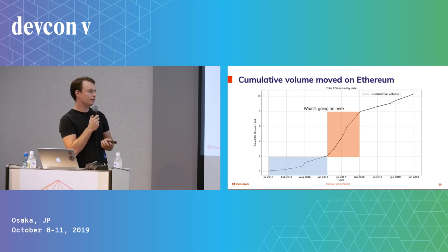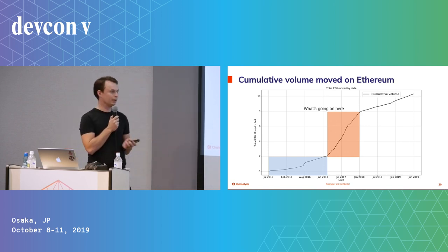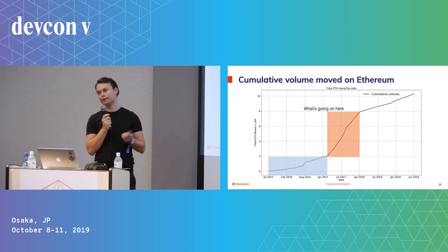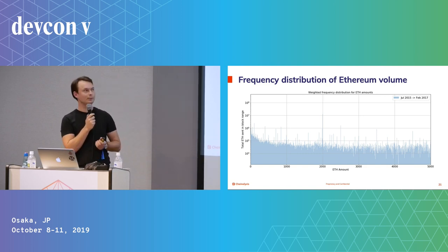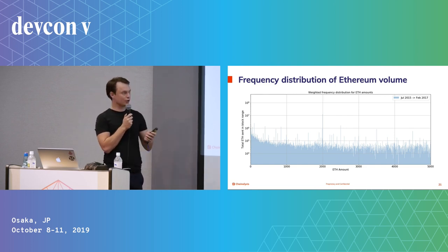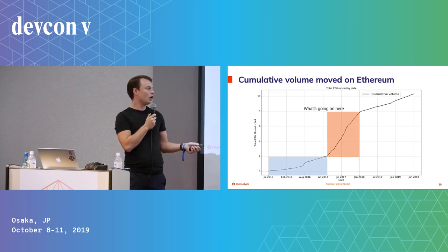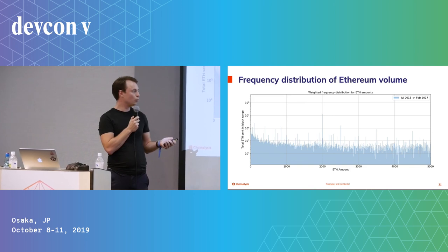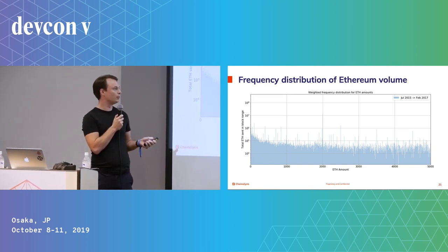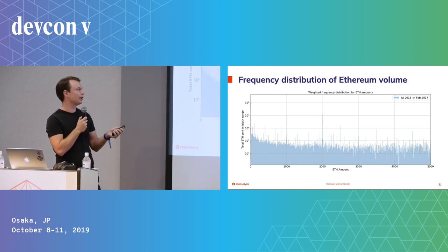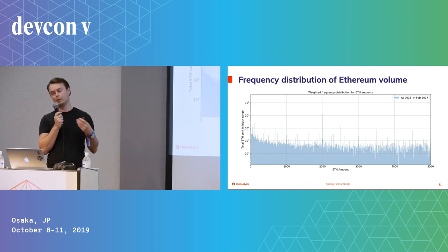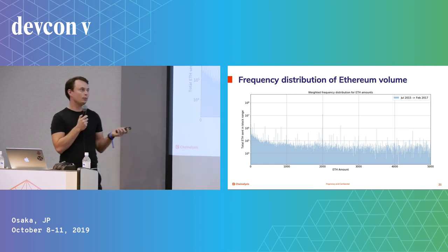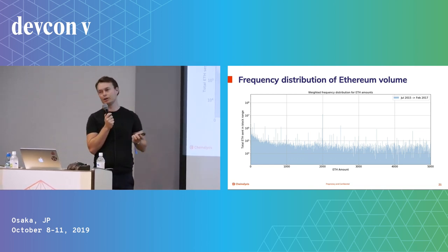We can divide these periods into two blocks — the initial period and the high growth period — and look at the frequency distribution. We take all the transfers from the initial blue period and ask how much volume was sent and which amounts account for the total volume. This graph shows that more total volume was sent through smaller transfer amounts in the initial period, which makes sense for a general economic network where most people don't have much, so they interact with smaller amounts. This looks like normal behavior.